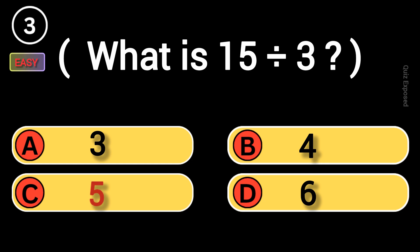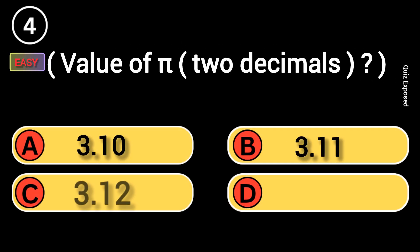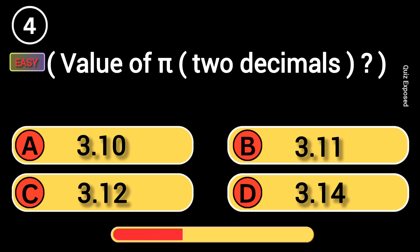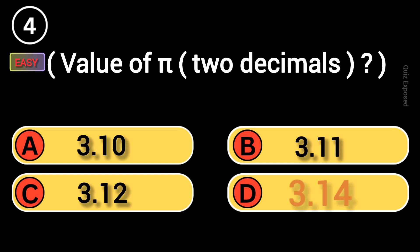That was easy, but the next ones you'll never solve them. Value of pi, 2 decimals? Correct, 3.14.